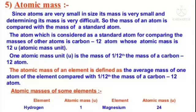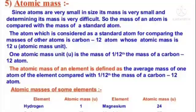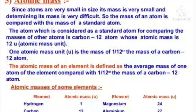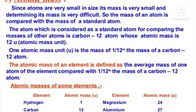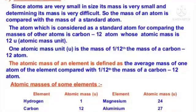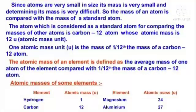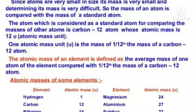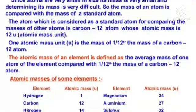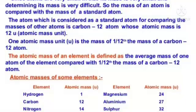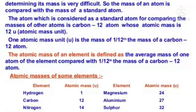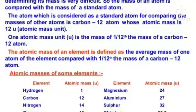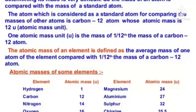Atomic mass: Since atoms are very small, their mass is very small and difficult to determine. So the mass of an atom is compared with the mass of a standard atom. The standard atom used for comparison is carbon-12, whose atomic mass is 12 u (atomic mass units). One atomic mass unit is the mass of 1/12 the mass of a carbon-12 atom. The atomic mass of an element is the average mass of one atom compared with 1/12 the mass of a carbon-12 atom. Atomic masses of some elements are given below.